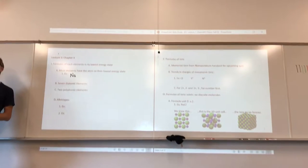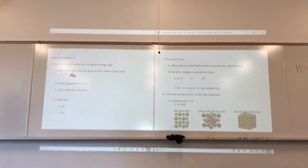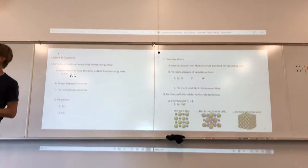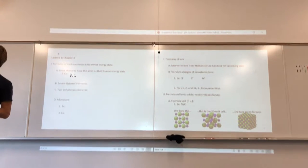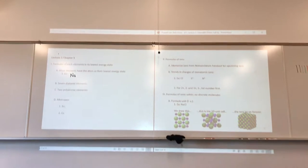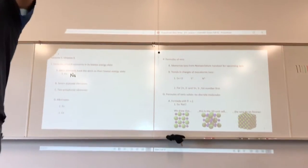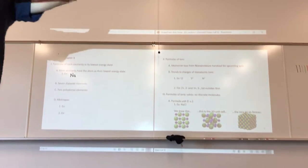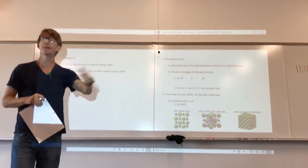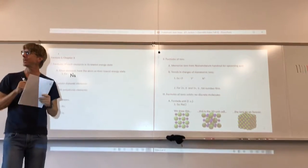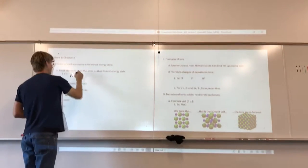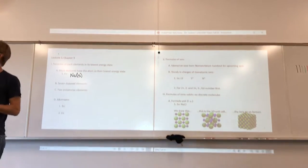Let's turn to our periodic table. You'll have the periodic table on all your exams. Some of the elements have black lettering, others have red, a few have blue, and several are ghosted out or outlined. When an element is black on the periodic table, at room temperature and pressure, its lowest energy state is the solid phase. So sodium, number 11, has black lettering — it's a solid. Red means gases.